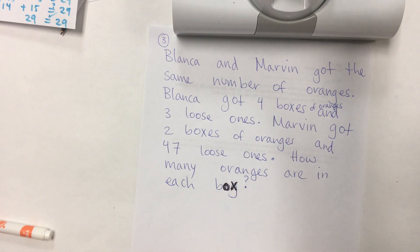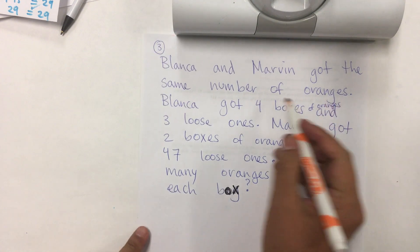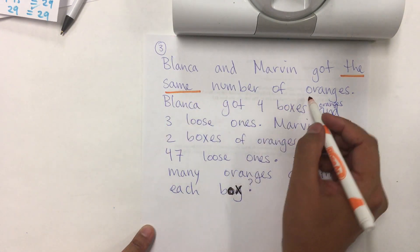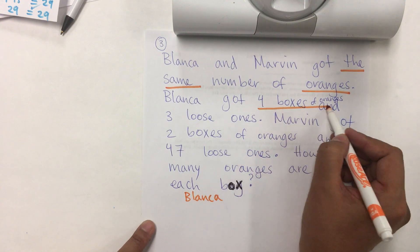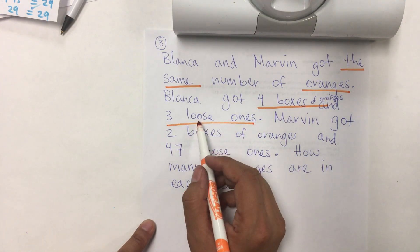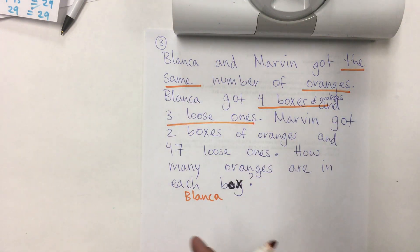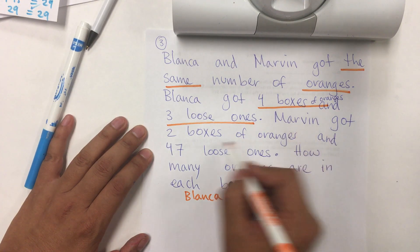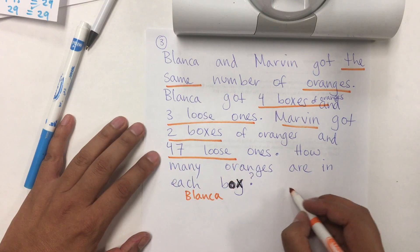We have one more. It says, Blanca and Marvin got the same number of oranges. Blanca got four boxes of oranges and three loose ones. Loose means, like, outside of the bag. It doesn't mean that you lost them. Marvin got two boxes and 47 loose ones.